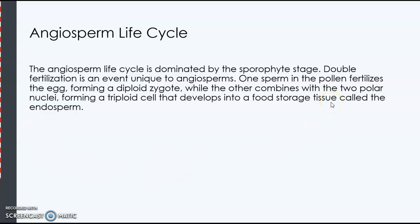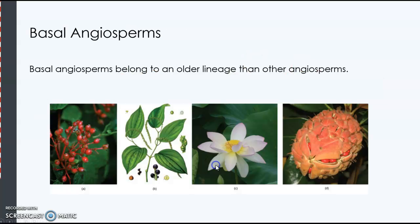With double fertilization, you have two sperm inside of the pollen grain. One sperm fertilizes the egg and the other one becomes the endosperm of the seed. The endosperm is the part of the seed that feeds the embryo.